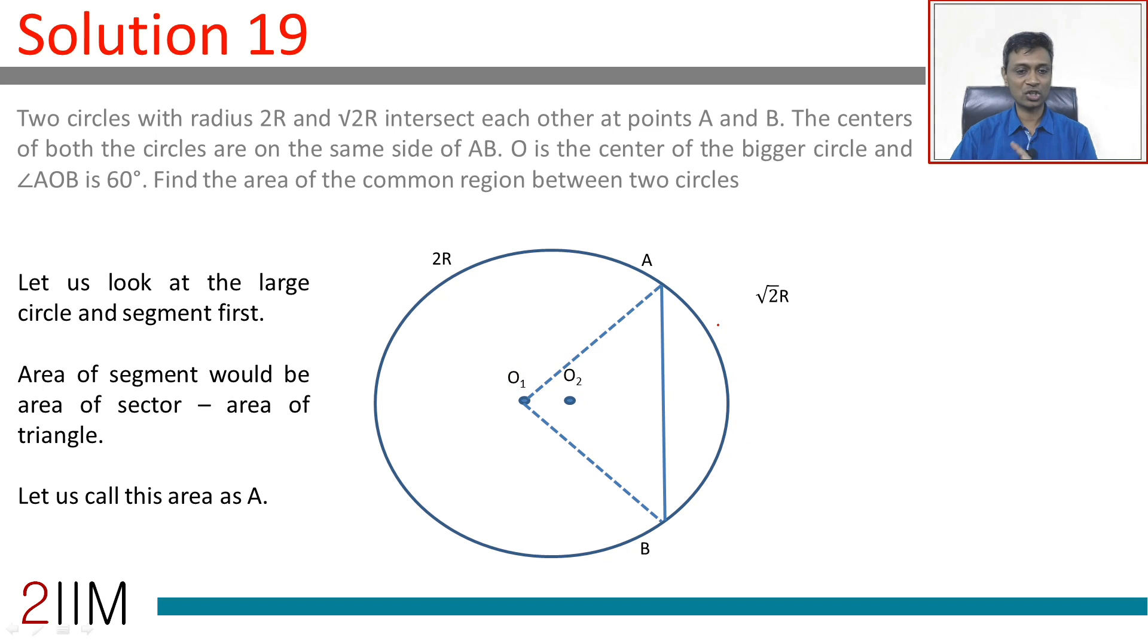Let us look at the large circle first. Large circle, this is 2R, 2R, 2R. We want this area, area of sector minus area of triangle.